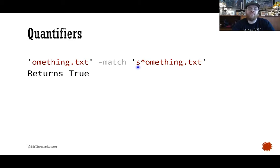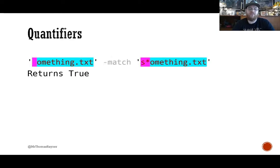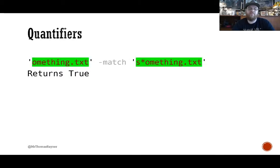That star doesn't just work like a wildcard the way you'd use it in Windows Explorer or the like operator. In regex, the star has a very particular meaning: to quantify the character or pattern that comes right before it — zero or more of whatever that character is. You can see how the pattern breaks down: there are zero or more S's right there, and then the rest of the string is found, so the entire pattern matches.